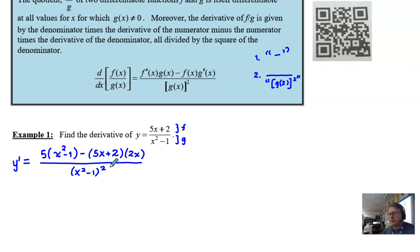And all of this would be placed over the denominator squared. And essentially, you're done. That's where you could stop. That is the correct derivative.